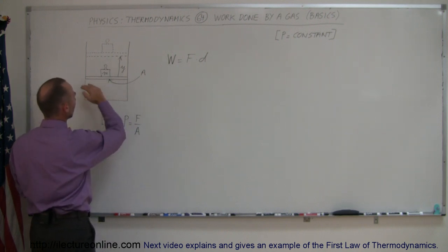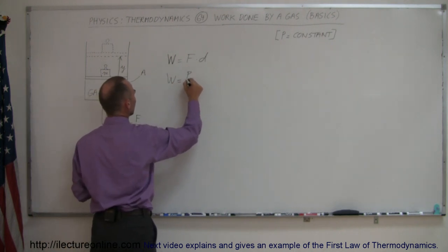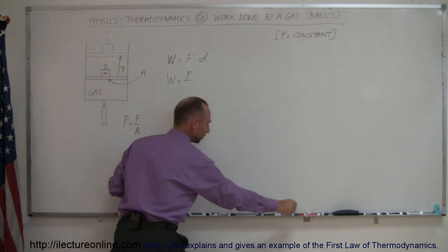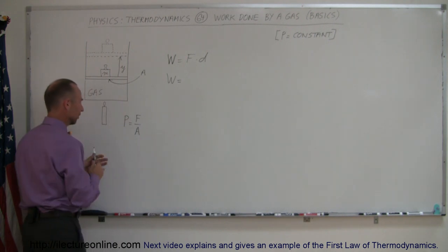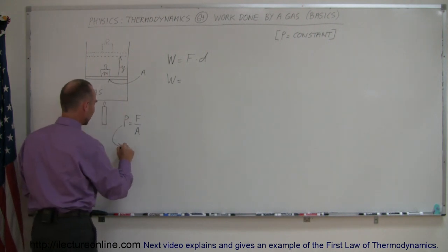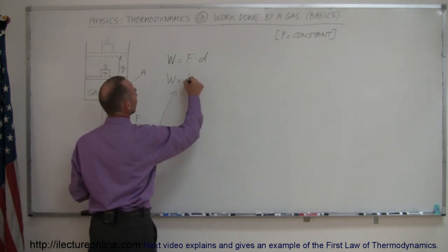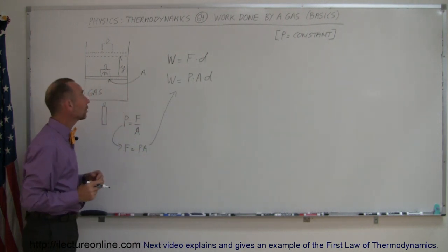We have the cross-sectional area of the piston here. Let's take this equation and say that the force is equal to pressure times area, and plug that into our equation. So work is equal to the pressure times the area times the distance over which we move it.